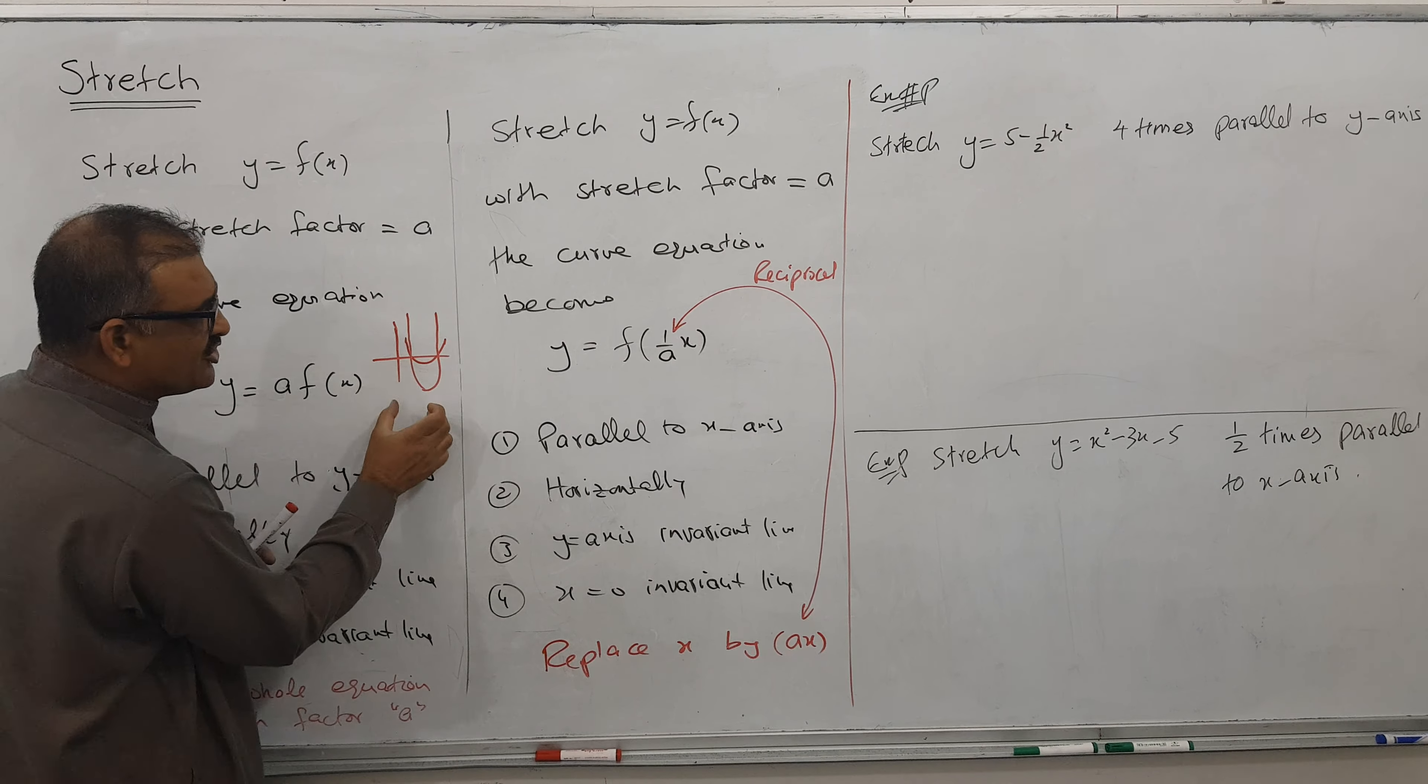y = 4(5 - 1/2x²). So answer becomes 4×5 is 20, 4 cancel with 1/2, we get 2x². So this is the answer and diagram will - I don't know exactly what kind of diagram, but let's assume. So this is a diagram, for example, this.